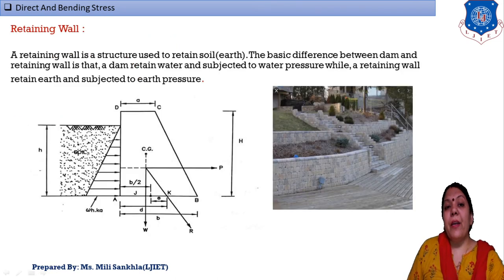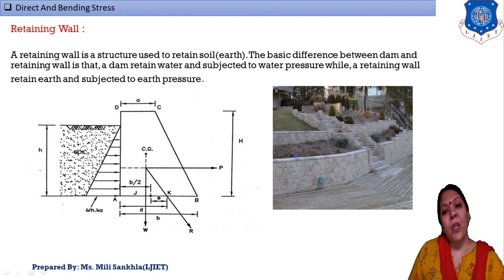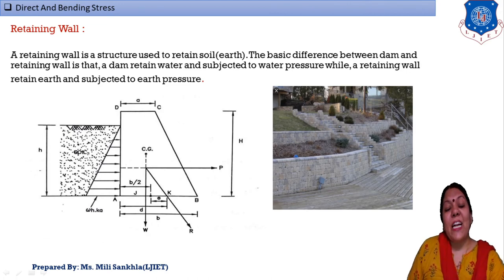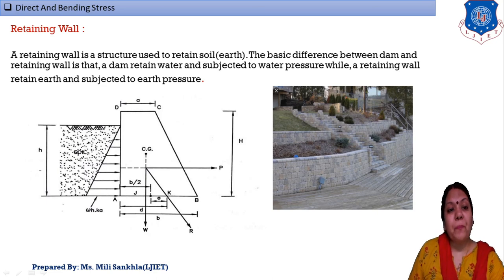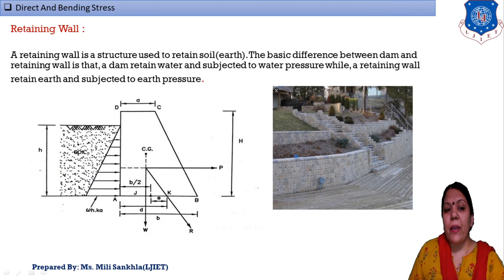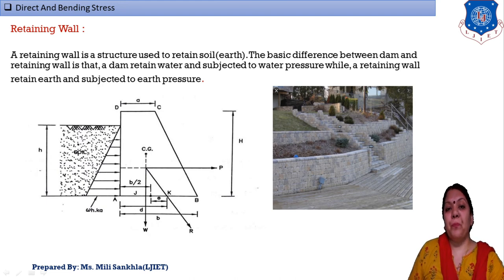Now we discuss the retaining wall. The change from a dam is that a retaining wall retains soil instead of water. The figure and side section are the same: 'a' = top width, 'b' = bottom width, 'H' = height of retaining wall, 'h' = height of soil level. The soil pressure is also a UVL type of loading, because soil density increases with depth. The soil load intensity is w × h × Ka.